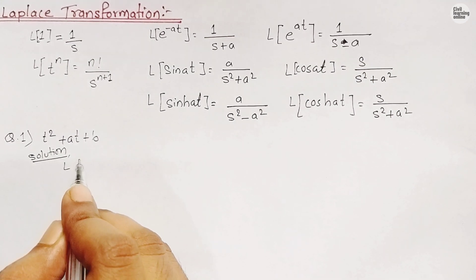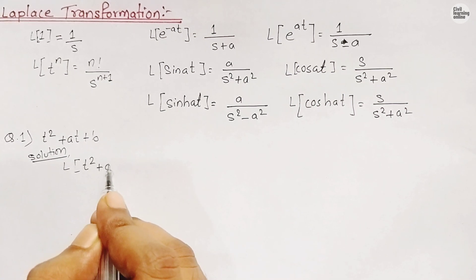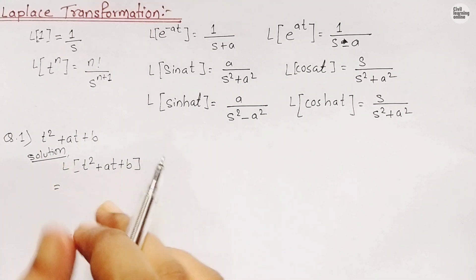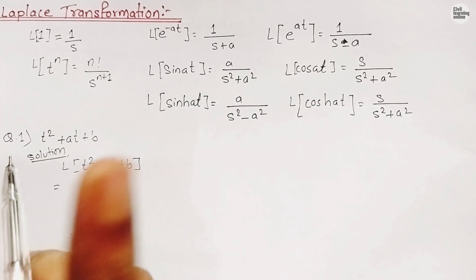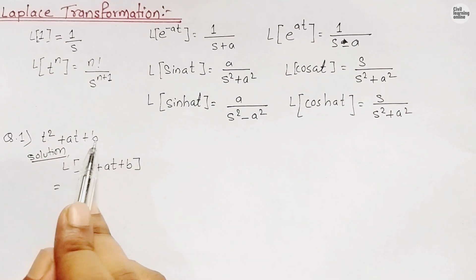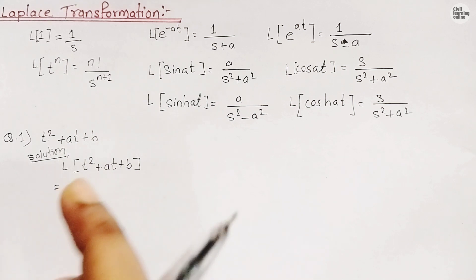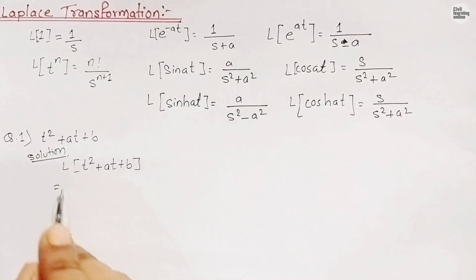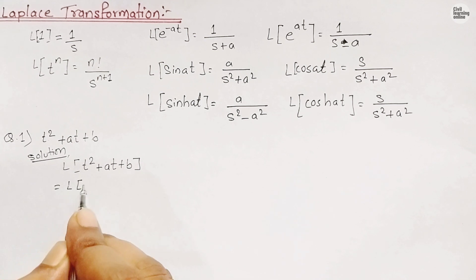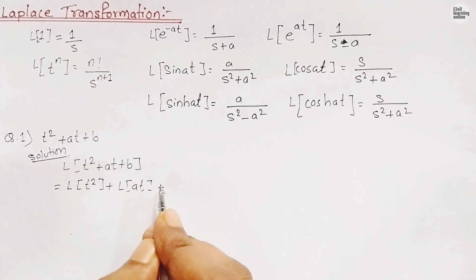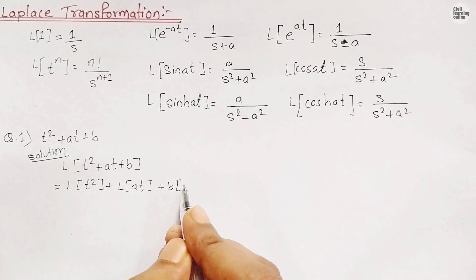Solution: Laplace transformation of (t² + at + b). This whole expression has three terms. The plus and minus signs separate the terms, so we split them: L{t²} + L{at} + L{b}, which becomes L{t²} + a·L{t} + b·L{1}.